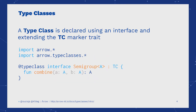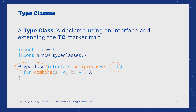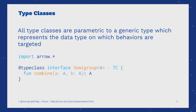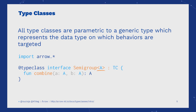A type class is declared in Aero using the type class annotation and the TC marker interface. As we can see here, a type class is always parametric to at least one type argument, which is the data type that the abstract behavior operates over.